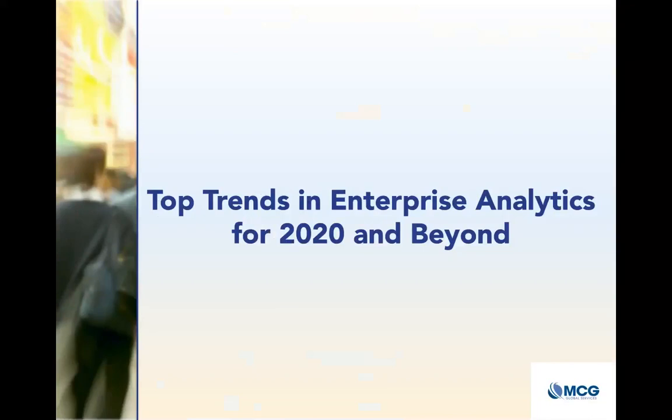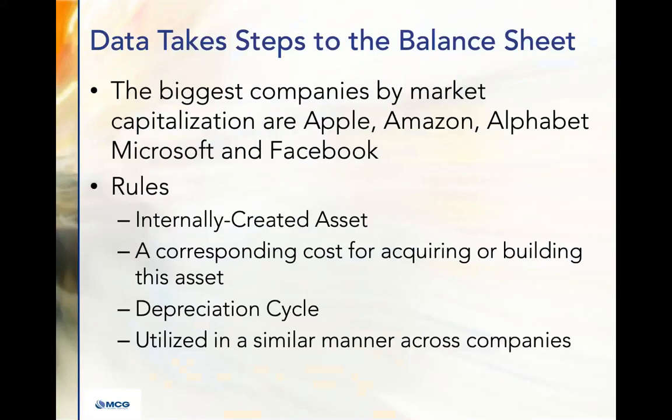Now let's get to the top trends. I've got ten for you. First: data takes steps towards the balance sheet. This has been talked about at a low level for quite some time. I sat down with my accountant for about an hour and talked about this. There are rules about assets, and one has to do with putting a cost on the asset — that's the big problem with making data an asset for the balance sheet because it's really hard to do. Do you put in costs for the hours spent collecting the data? That doesn't seem to make a lot of sense. There's really no accounting model for it today.